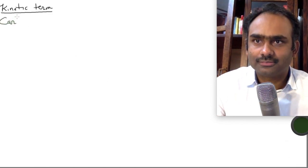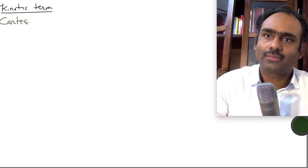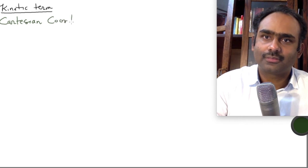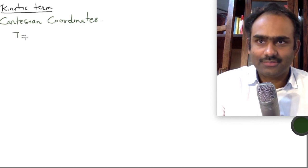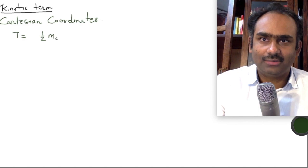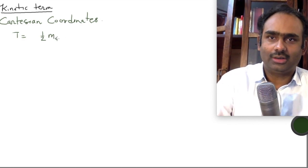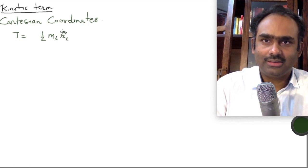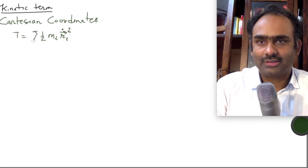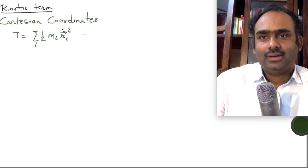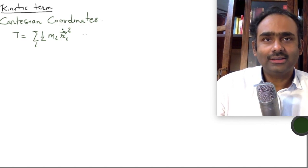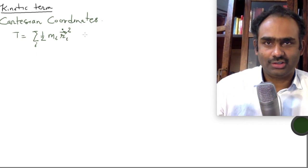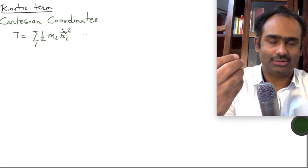Cartesian. What do you see when you are using Cartesian coordinates? You get T as half mᵢ ṙᵢ² — a sum over i of half mᵢ ṙᵢ². So this is of course quadratic in velocities. Note that there is no term which involves a product of the velocity of particle i with particle j. There is no such term.